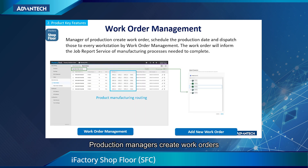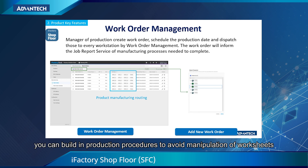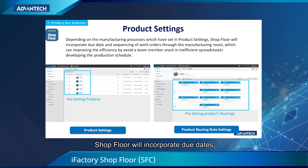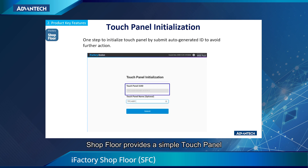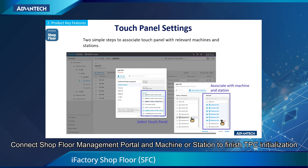Production managers create work orders, schedules, and production dates, and dispatch them to every workstation via work order management. The work order will inform the job report service of manufacturing processes that need to be completed. At the same time, you can build in production procedures to avoid manipulation of the worksheets. Depending on the manufacturing process, Shopfloor 4 will incorporate due dates and sequencing of work orders through the manufacturing workflow. Shopfloor 4 provides a simple touch panel — you will easily get used to it due to its intuitive design. Connect the shop floor management portal and machine or station to finish utilization.